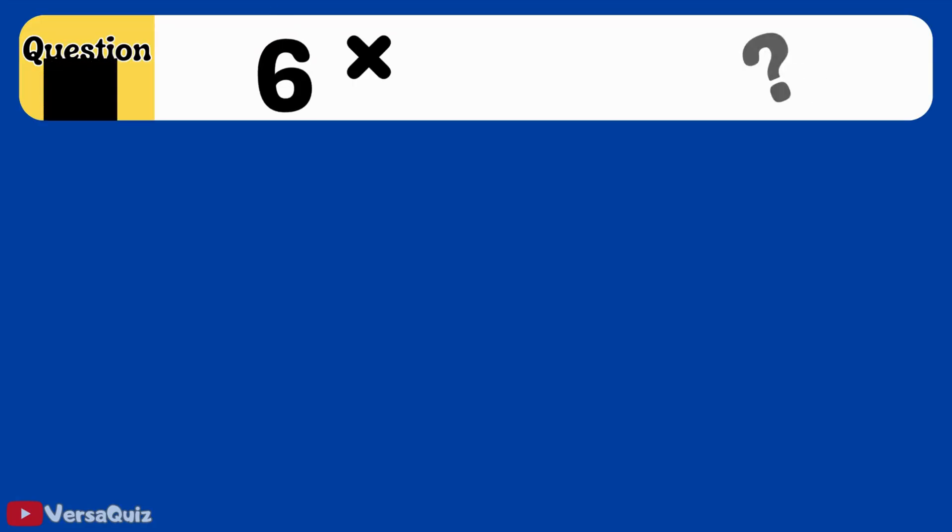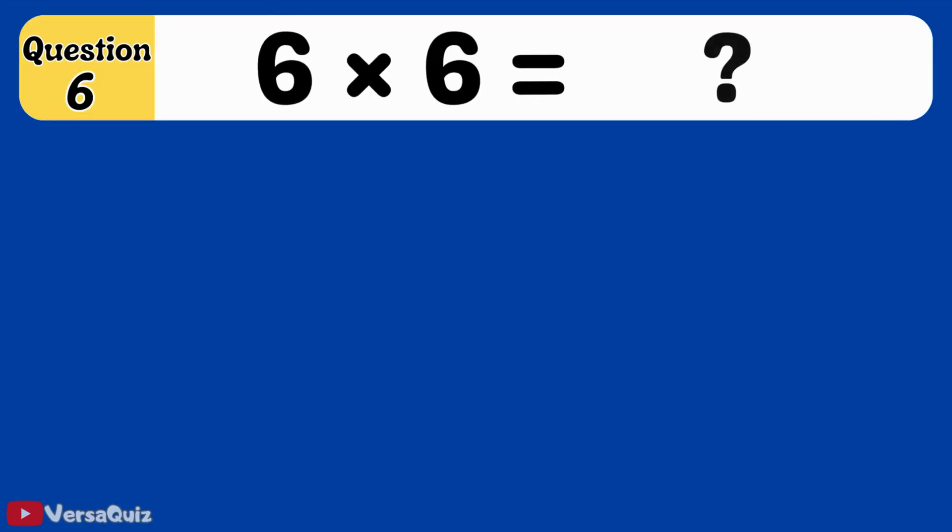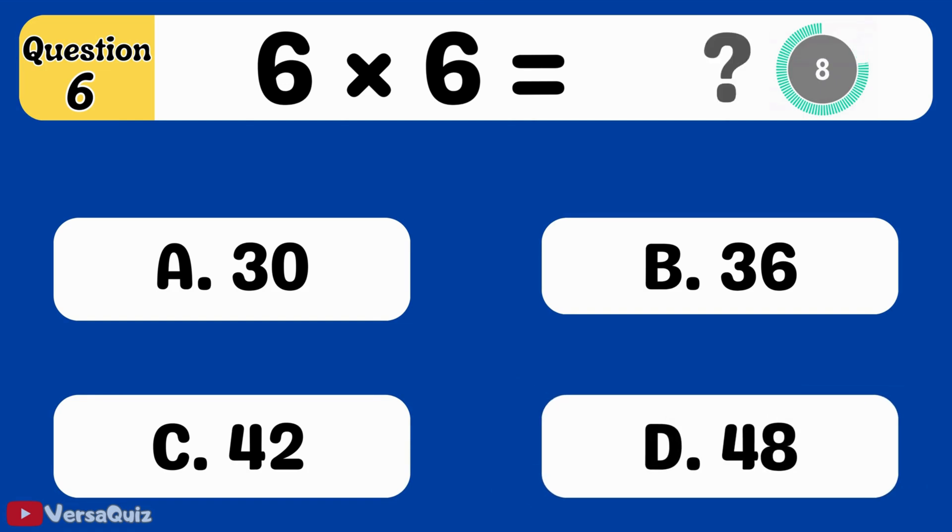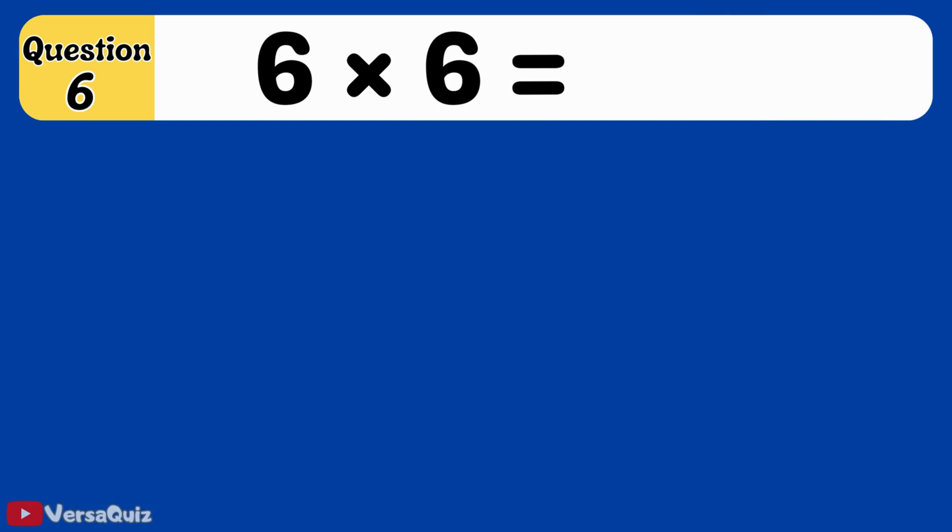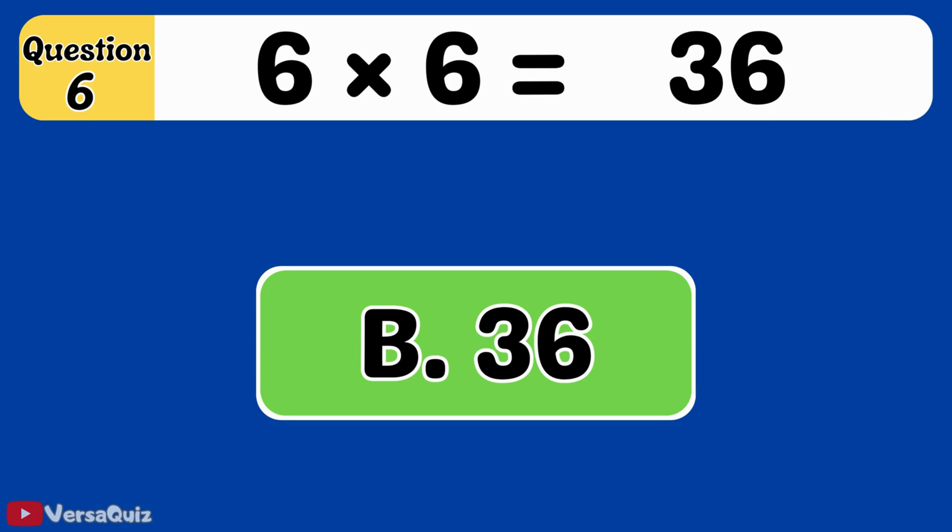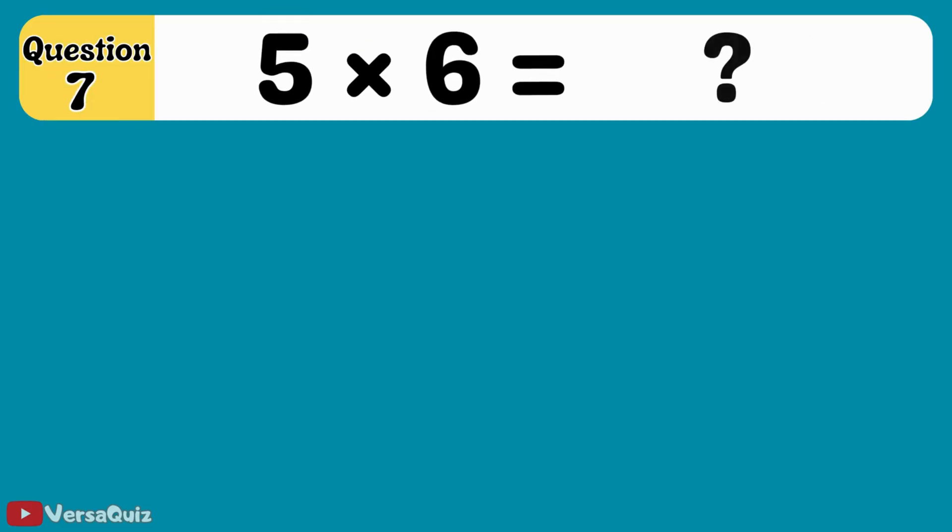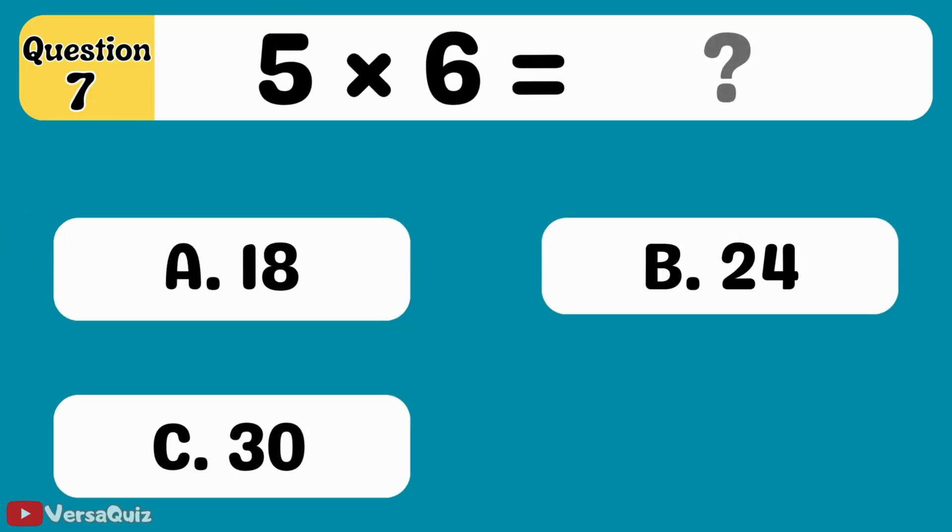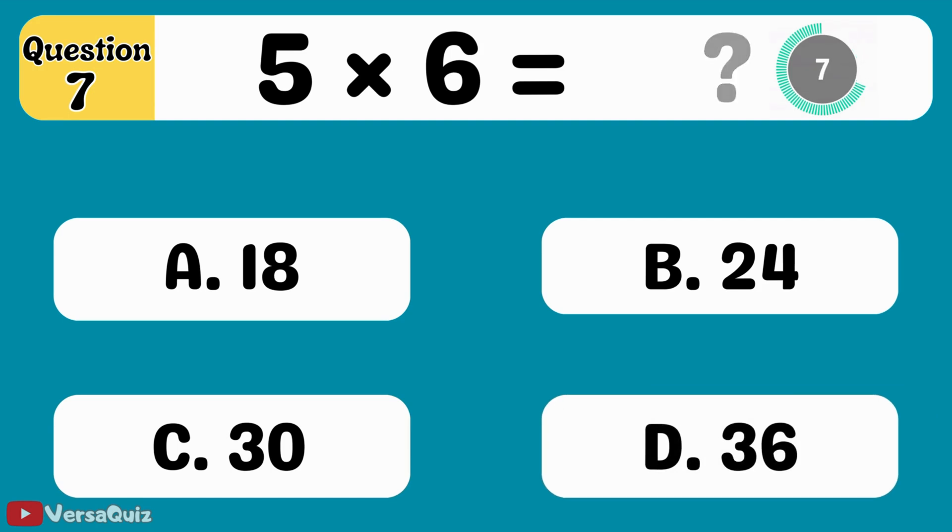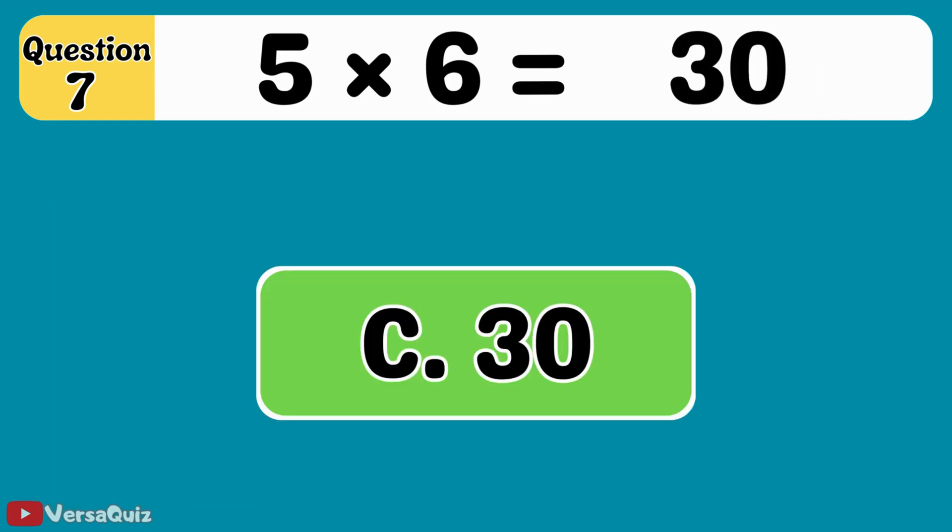Next question. What is 6 times 6? 36. 6 times 6 equals 36. Next question. Multiply 5 by 6. Choose the correct option. 30. 5 multiplied by 6 equals 30.